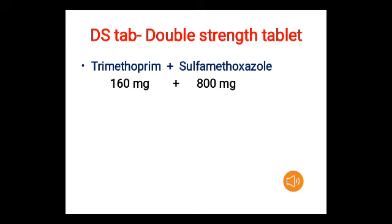Double strength (DS) tablets are also available, containing trimethoprim 160 mg and sulfamethoxazole 800 mg.